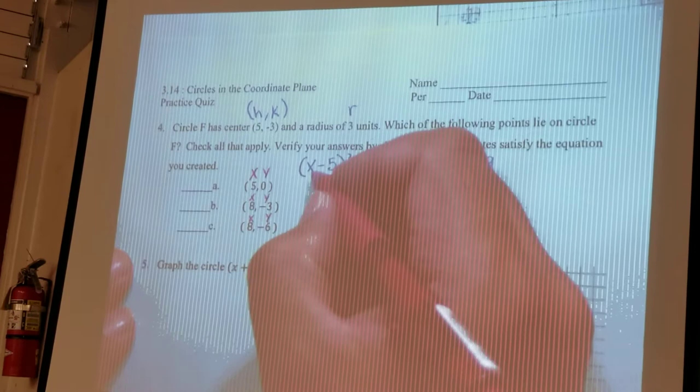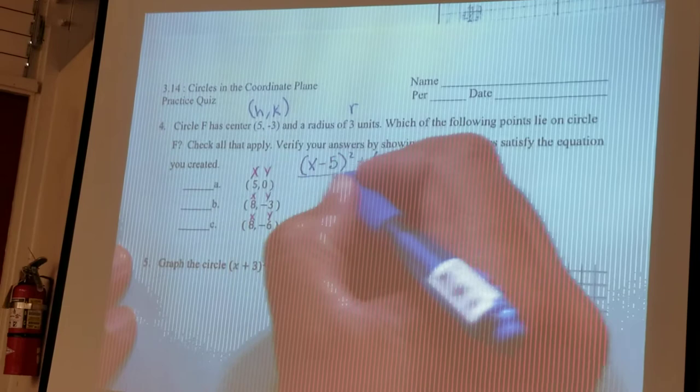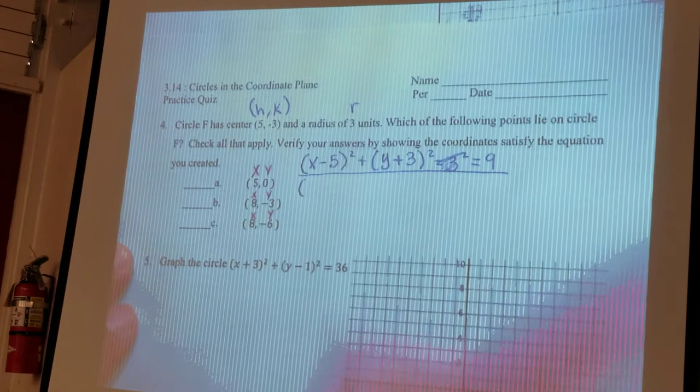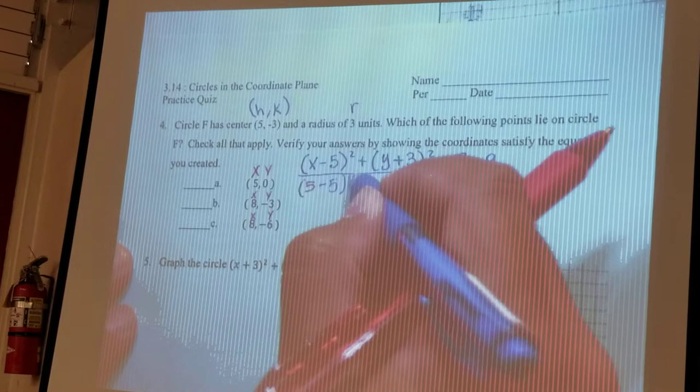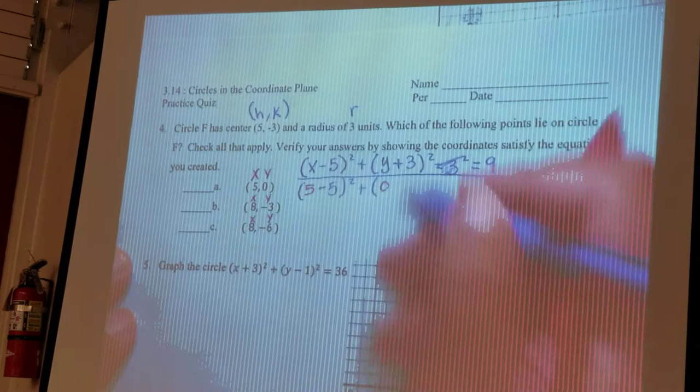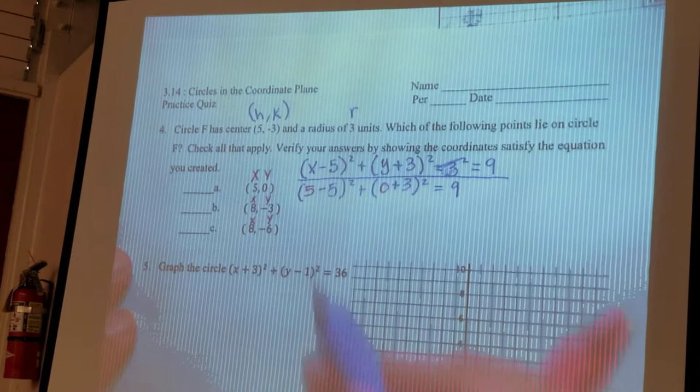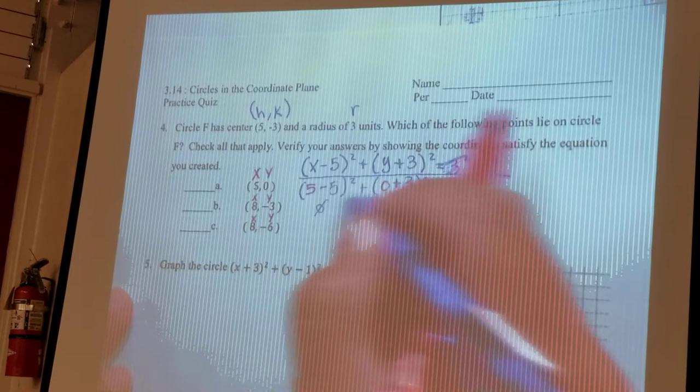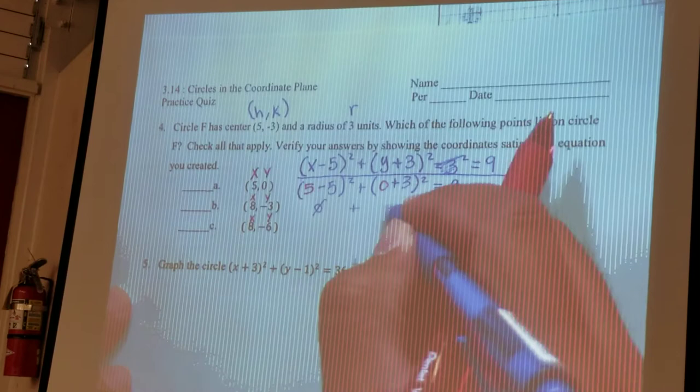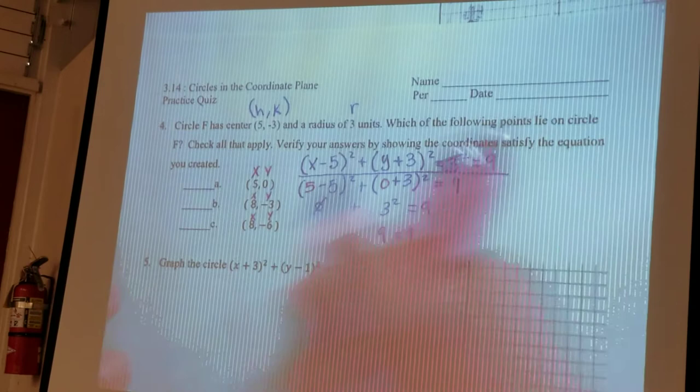So, if I plug this in, this becomes... So, we'll test the first one out. Which is... So, I plug in the X, it's 5. And I plug in the Y. Alright, and then I test these out. 5 minus 5 is 0. And then it's plus 0 plus 3, which is 3 squared. And 3 squared is the same as 9.